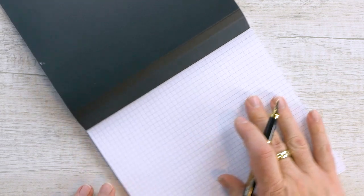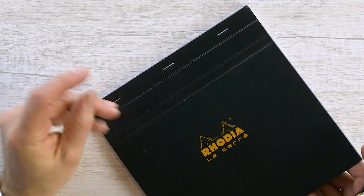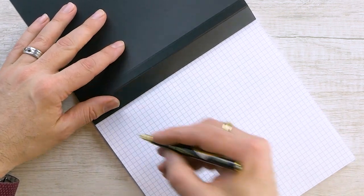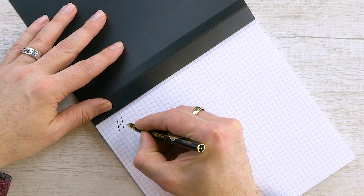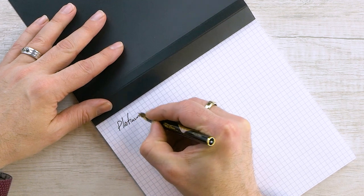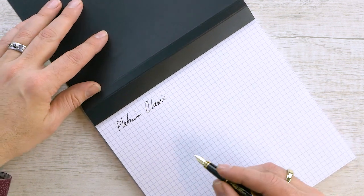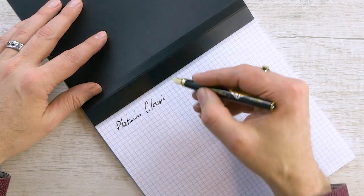And I've got this inked up. And I've got my Rhodia pad here. My Le Carrere graph. And let's take it for a spin. Very smooth. And actually, for a medium, it's not too fine.